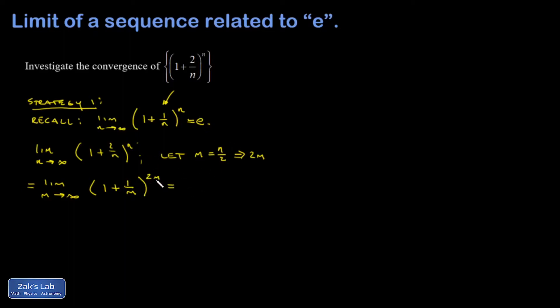And so I can use the properties of limits and say that this is equal to the limit as m goes to infinity, one plus one over m to the m all squared. So in other words, the limit of the square of the thing is the square of the limit of the thing. And now what I have in these parentheses is just the number e. So I end up with e squared and I'm done. This sequence converges to e squared.